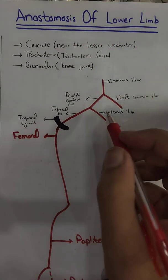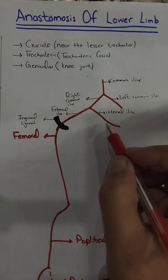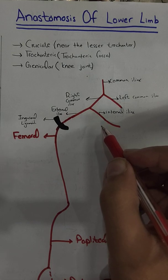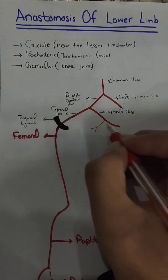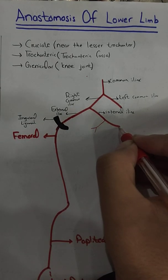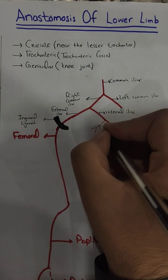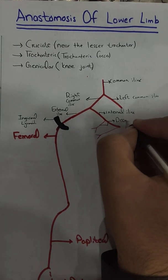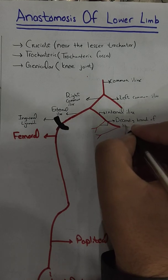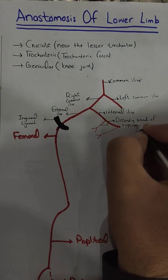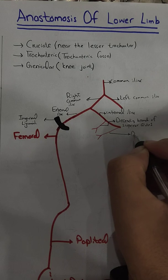From the internal iliac artery there will be two branches: the descending branch of the superior gluteal artery and the descending branch of the inferior gluteal artery. We will label these — this is the descending branch of the inferior gluteal artery and this will be the descending branch of the inferior gluteal artery.